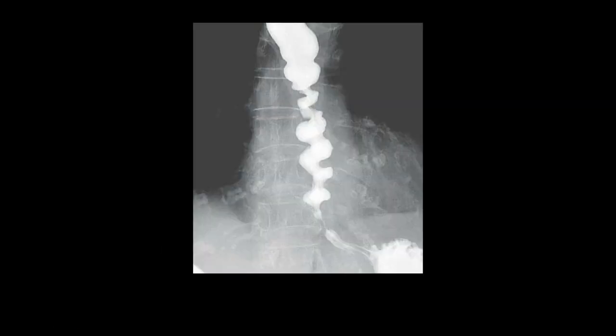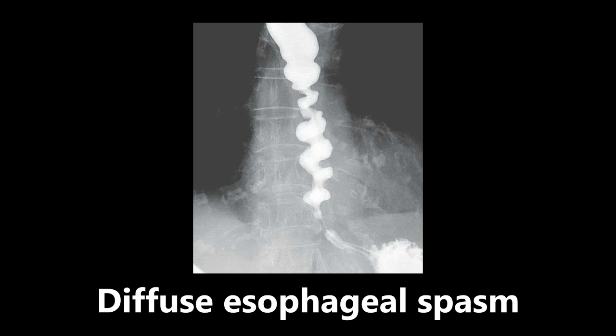Next image, we're looking at the esophagus, and there are a lot of abnormal shapes and contractions going on here. This is diffuse esophageal spasm. If someone does a barium swallow and you see that the esophagus is not uniformly contracting — some areas very contracted, some areas less contracted — it is because it is spasming, and this is diffuse esophageal spasm.